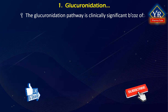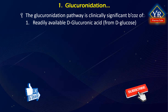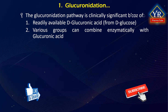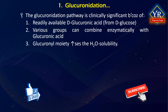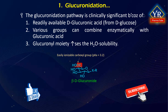The glucuronidation reaction is clinically significant because of several reasons: number 1, a readily available supply of D-glucuronic acid which is derived from D-glucose; number 2, numerous functional groups that can combine enzymatically with glucuronic acid; and number 3, the glucuronyl moiety which when attached to xenobiotic substrates greatly increases water solubility of the conjugated product, with its easily ionizable carboxylic acid which possesses pKa of 3.2 and three hydroxyl groups.